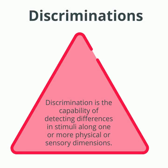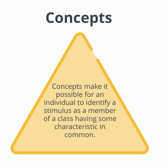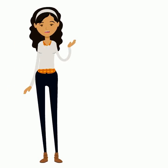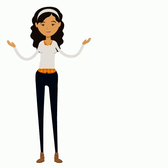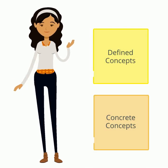Discrimination is the capability of detecting differences in stimuli along one or more physical or sensory dimensions. Concepts make it possible for an individual to identify a stimulus as a member of a class that has some characteristic in common. Concepts can be divided into two categories: concrete concepts and defined concepts.